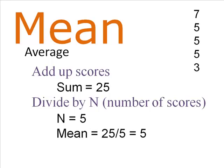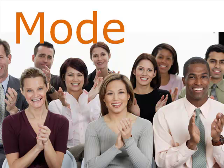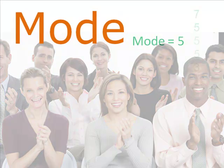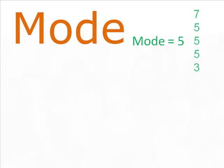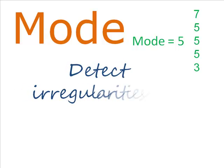The mode is even easier. The mode is the most common score — think of it as popularity. Whichever score occurs most often is the mode. Just count how many times people pick each score. The real value of the mode is detecting irregularities in the shape of a distribution.